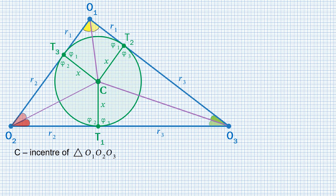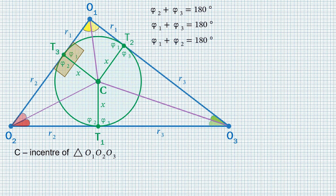Now we are going to prove that the green circle is actually the in-circle of triangle O1O2O3. We use the previously introduced angles φ1, φ2 and φ3. Consider angles near T1: angles φ2 and φ3 together form a straight angle, so φ2 plus φ3 equals 180 degrees. Similarly, for T2 we get φ1 plus φ3 equals 180 degrees, and for T3, φ1 plus φ2 equals 180 degrees.